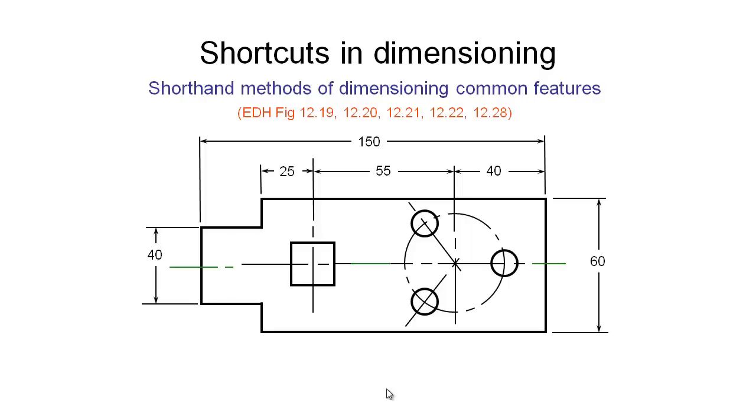We have some other very handy shorthand methods for dimensioning common features. So this square here, in this case it looks like a square hole, these are very difficult to make and we generally recommend you don't design square holes. But if we had a square feature, we can choose to dimension it by using this square symbol at the front of the dimension. And the dimension of 20 implies that each of these sides is 20 millimeters.